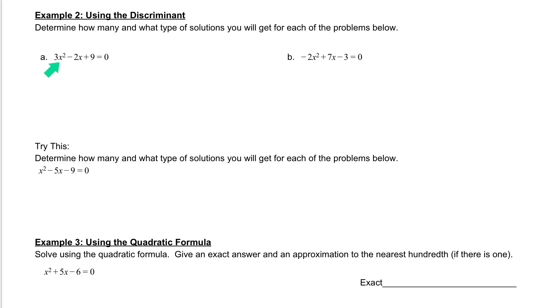If we were to solve this problem, 3x squared minus 2x plus 9 equals 0, using the discriminant we can tell what type of solutions we have and how many. Remember the discriminant is b squared minus 4 times a times c. The a, b, and c's are coming from our equation.